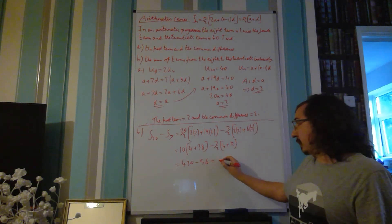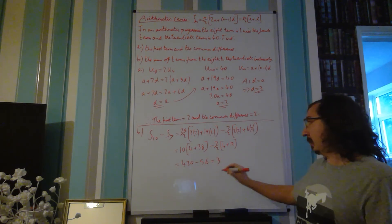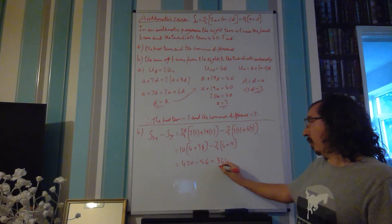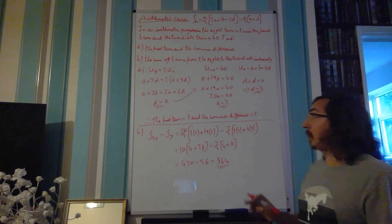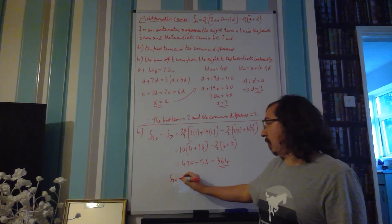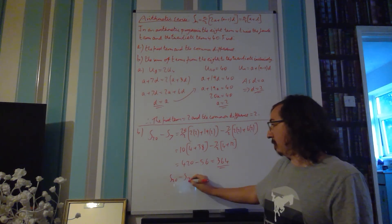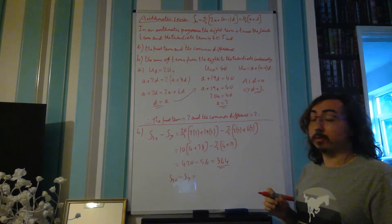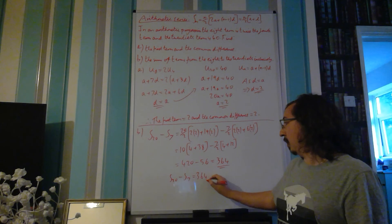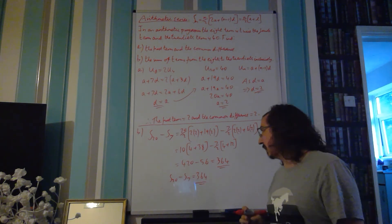And if we subtract that away, we're left with 364. And that becomes our final answer for part B. So, the summation of the 20th term minus the 7th term, which is the equivalent of the sum of the terms from the 8th to the 20th inclusively, is 364.